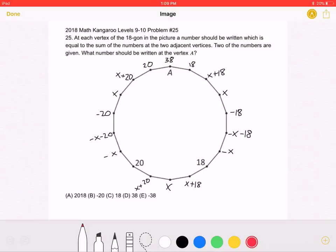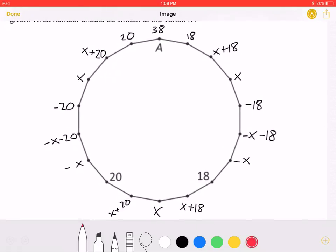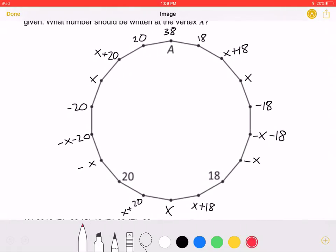Let's zoom in a little more to our image. Let's start by marking this bottom vertex as X. The problem has already given us this vertex 20 and this one 18.